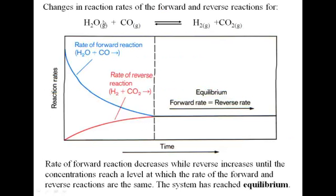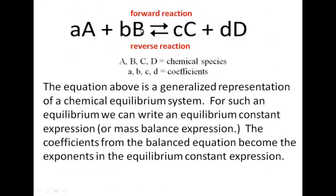So in our previous example, the A might have been water, the B would have been carbon monoxide, the C would have been H2 gas, and the D would have been carbon dioxide gas. Then the small or lowercase letters A, B, C, and D are the coefficients in the balanced equation.